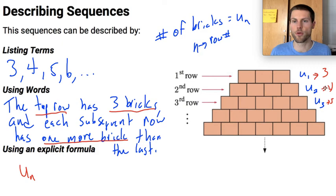If I wanted to relate the number of bricks somehow to the number of the row that I'm in. Well, you might have noticed that in the first row I've got 3 bricks, the second row I've got 4 bricks, the third row I've got 5 bricks. The number of bricks is always looking like it's going to be 2 more than the actual row number that I'm in.